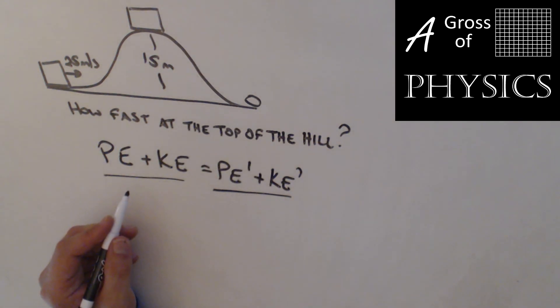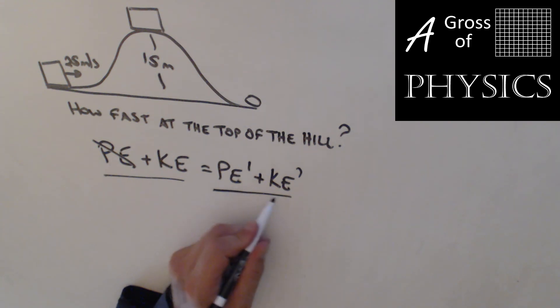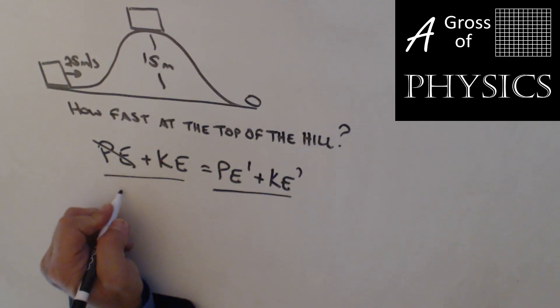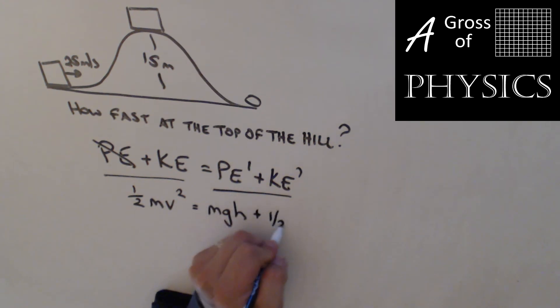So at the bottom of the hill, my initial condition, I'm at the ground, so I don't have any potential. Now at the top of the hill, I have potential, and I'm probably going to have kinetic, so we'll leave those two terms. The equation for kinetic energy is one-half mv squared equals mgh for potential energy plus one-half mv squared for the kinetic energy.